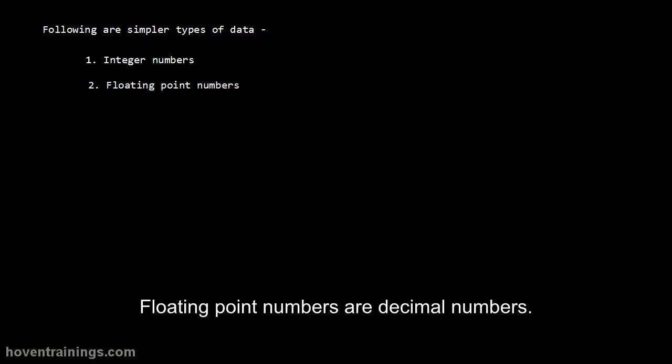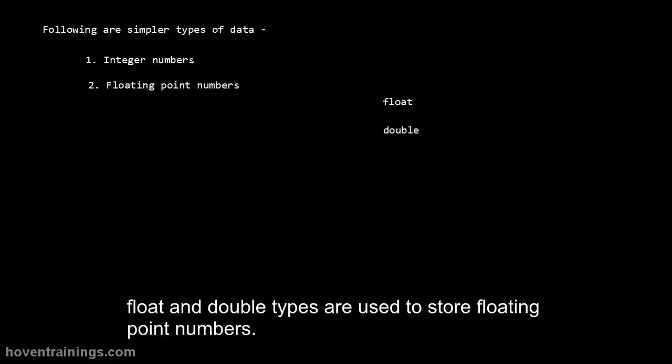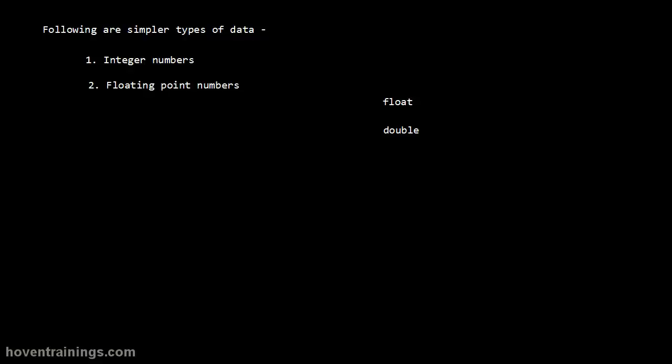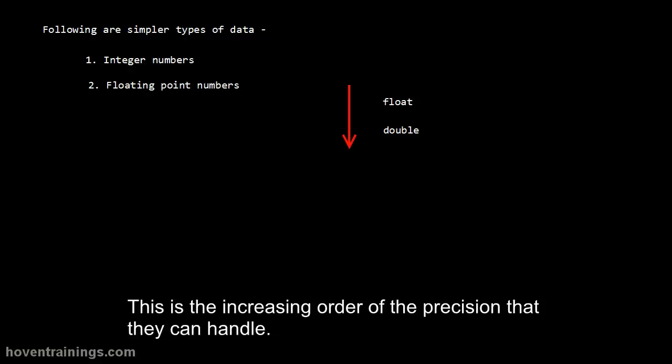Floating point numbers are decimal numbers. They contain a decimal point for the fractional part. Float and double types are used to store floating point numbers. This is the increasing order of the precision that they can handle.